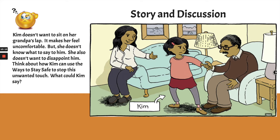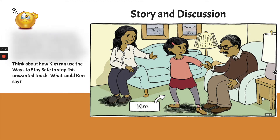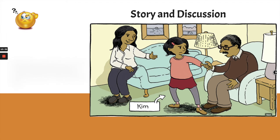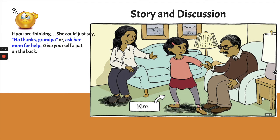Think about the words Kim can use and the ways to stay safe to stop this unwanted touch. Remember the ways to stay safe: recognize — which she's already done — then report and refuse. What could she say? She could just say 'No thanks, grandpa,' and ask her mom for help. That's exactly right. She recognized it was an unwanted touch, so she can refuse by saying 'No thanks, grandpa,' and then ask her mom for help.